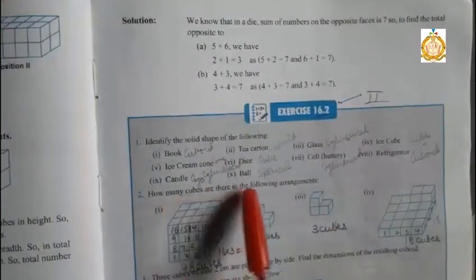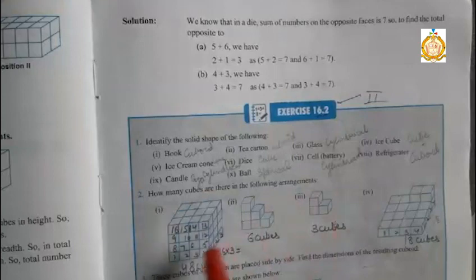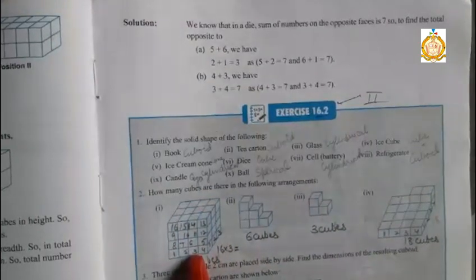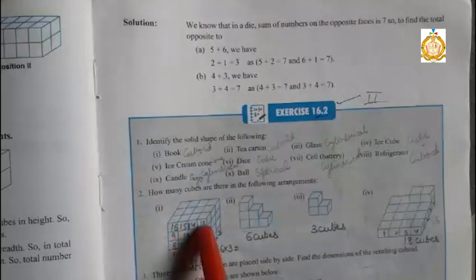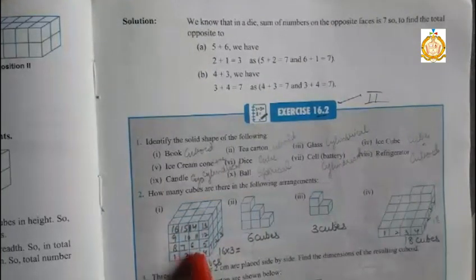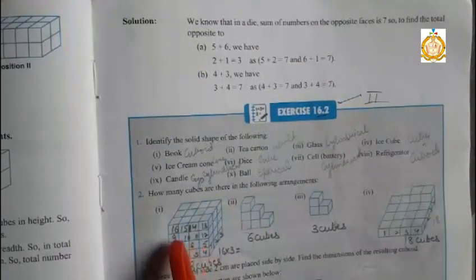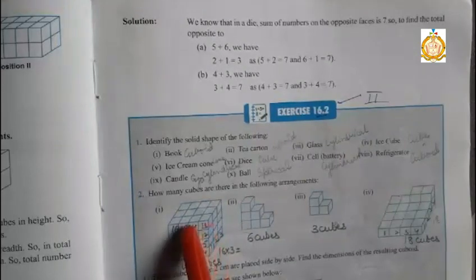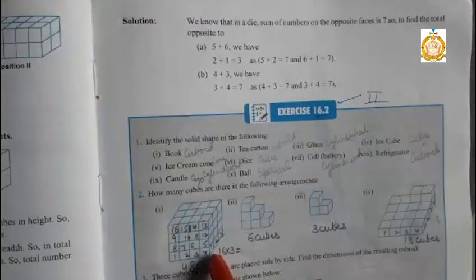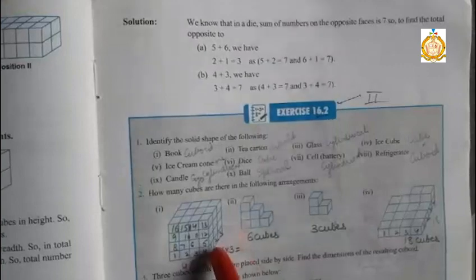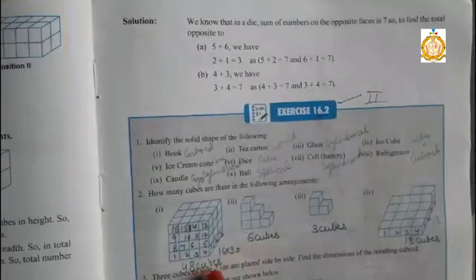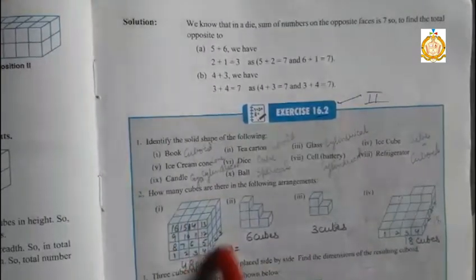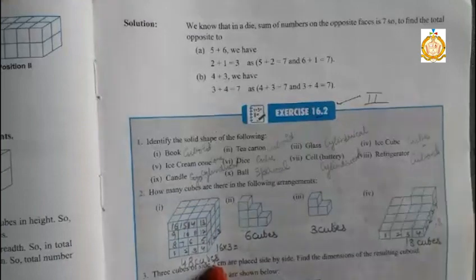Second, how many cubes are there in the following arrangement? Students, here we have to find out the cubes. First of all, count all the cubes which are on the front side: 1, 2, 3, 4, 5, 6, 7, 8, 9, 10, 11, 12, 13, 14, 15, 16. And which are on the side, count only the lower row: 1, 2, 3. Multiply 16 by 3. 16 by 3 equals 48 cubes. So students, in this box, 48 cubes are present.